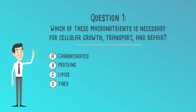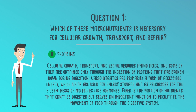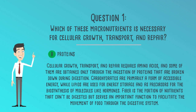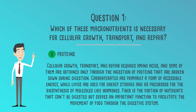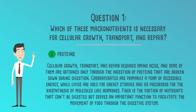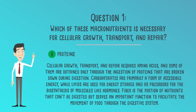B. Proteins is correct. Cellular growth, transport, and repair requires amino acids, and some of them are obtained only through the ingestion of proteins that are broken down during digestion. Carbohydrates are primarily a form of accessible energy, while lipids are used for energy storage and as precursors for the biosynthesis of molecules like hormones. Fiber is the portion of nutrients that can't be digested, but serves an important function to facilitate the movement of food through the digestive system.